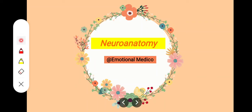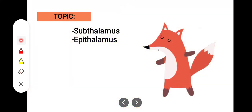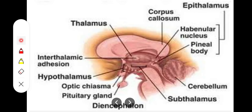In this video we will take a look at the subthalamus and epithalamus, which are both components of the diencephalon. The subthalamus is the structure of the diencephalon present beneath the thalamus. It consists of some important nuclei that are basically displaced from the midbrain — for example, some portion of the red nucleus and some portion of the substantia nigra.